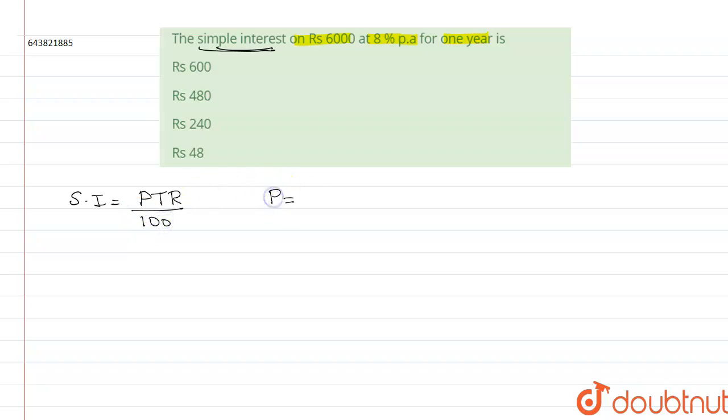So, what is P here? P is principal amount. Here the principal amount is given as Rs. 6000.